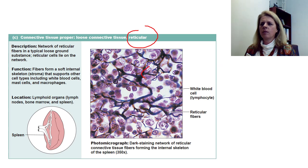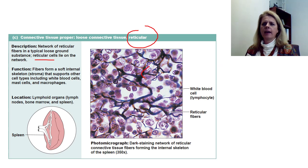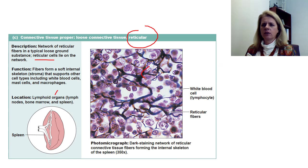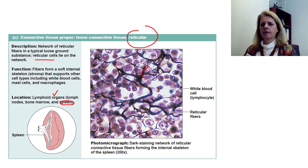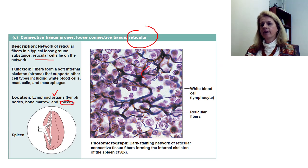Reticular tissue is web-like and forms kind of a scaffold — like an internal skeleton for your organs. One of the places you'll see it is in your lymphoid organs, like the spleen. Your spleen is part of your immune system, and blood and lymph fluid flow through it. It acts as a filter — like a colander — to remove bacteria and old red blood cells. As stuff flows through the spleen through this web-like structure, things can be removed from either the lymph or the blood.